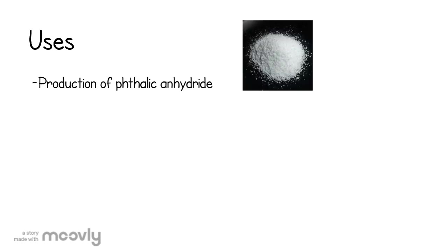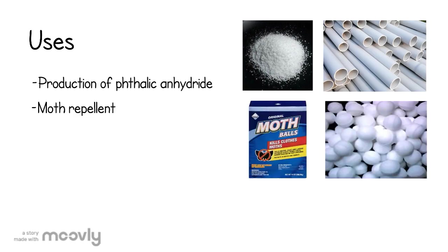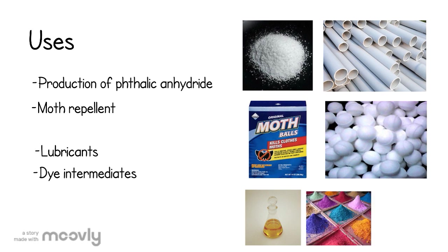Naphthalene is mainly used to produce phthalic anhydride through oxidation, which is used to create plastics. It is also used in moth repellents because of its ability to vaporize at room temperature and release gas that is toxic to moths. Other uses include creating lubricants, dye intermediates, and tanning agents.